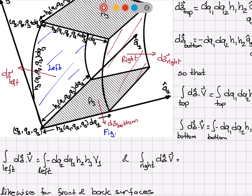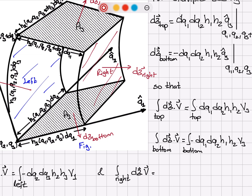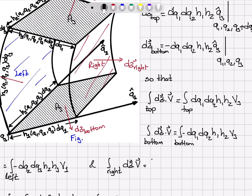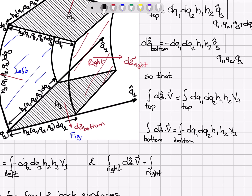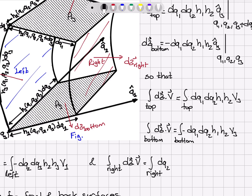For the right side, the area vector points in the plus q_1 hat direction, so this is a positive dot product. The integral for the right surface is dq_2 dq_3 h_2 h_3 v_1, but h_2 and h_3 must be evaluated at q_1 plus dq_1, q_2, q_3, since that is where the right surface is located.